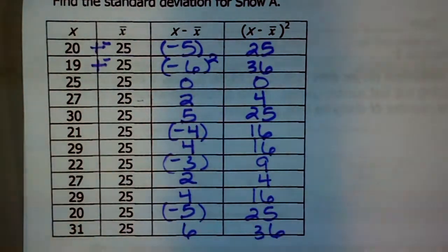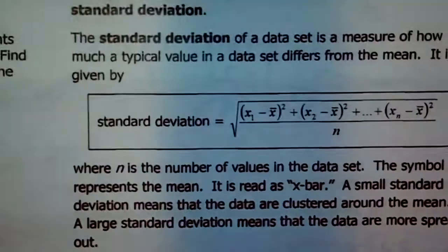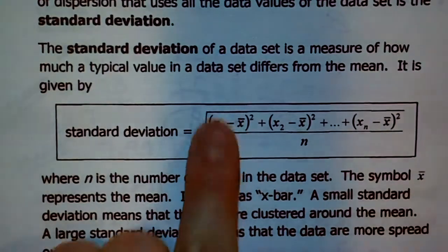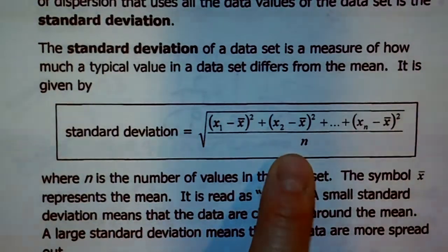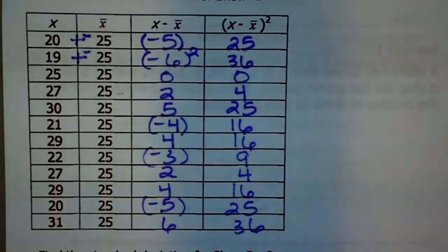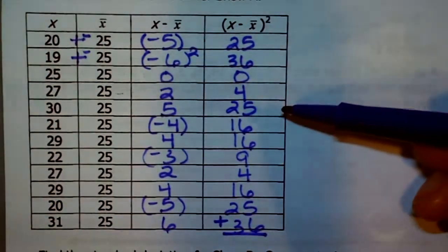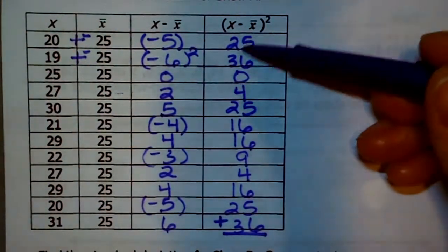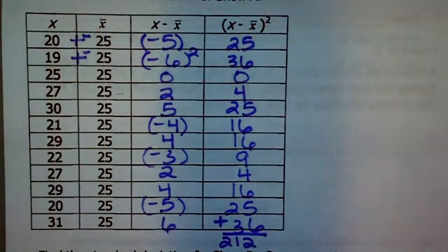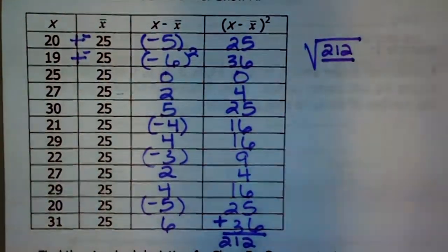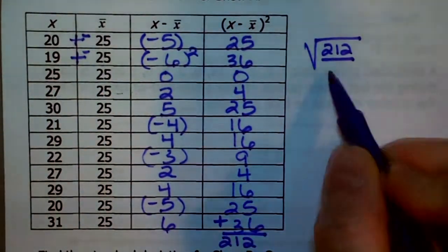According to that formula, you add up all of those squared values, divide by how many you added, and at the end take the square root. So add up all the values in the last column. When you add all of these numbers together you should have gotten 212. Standard deviation: take the square root of 212 divided by 12, which was our number of values.